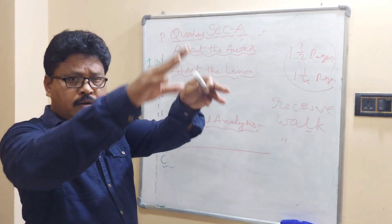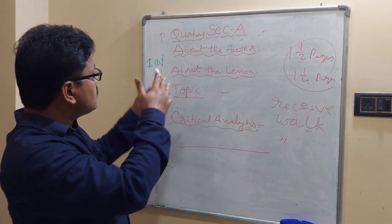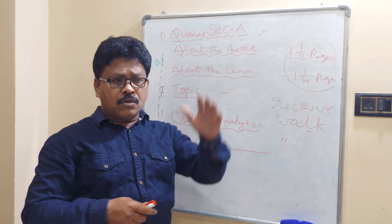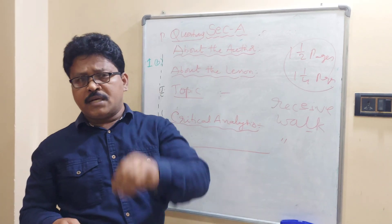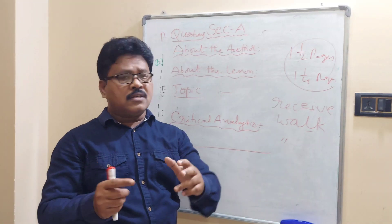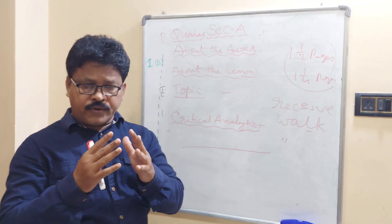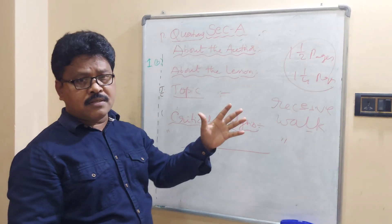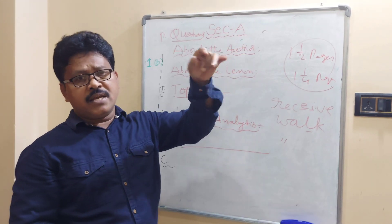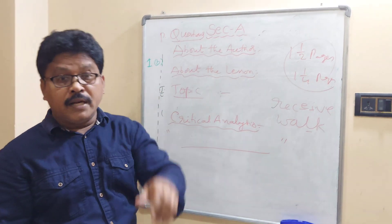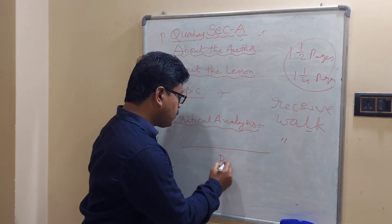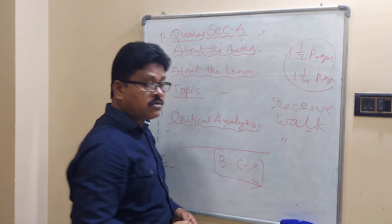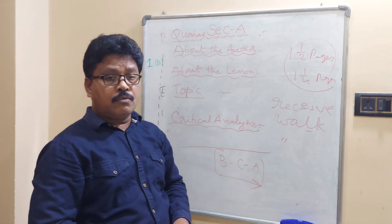Some students ask which section to start with. First, go through the paper quickly in two to three minutes. If you are 100% confident with grammar, start with grammar — Section C first, then Section B, then Section A. This formula — B, C, A — is the best way to answer the paper if you are strong in grammar. It also helps with time management.